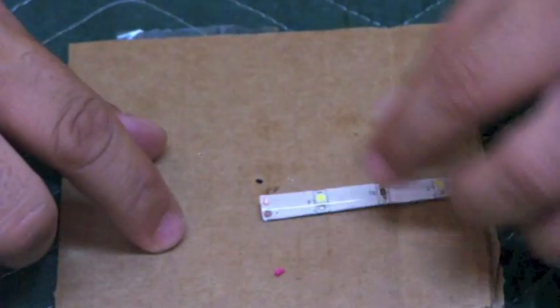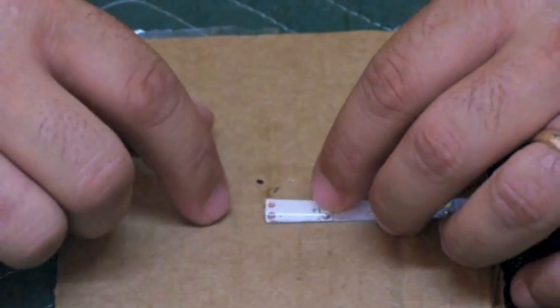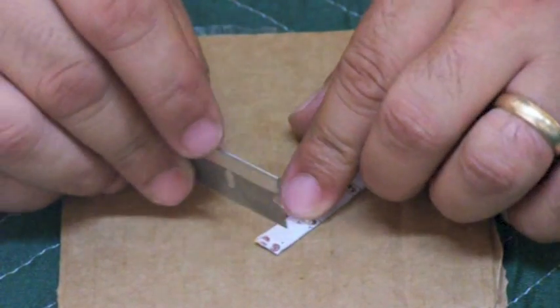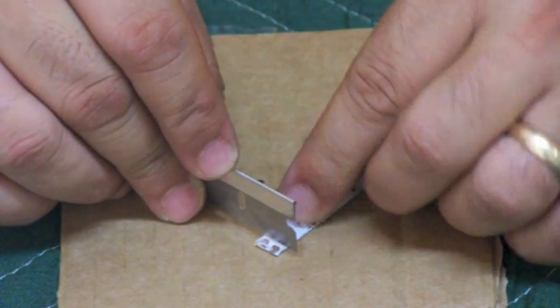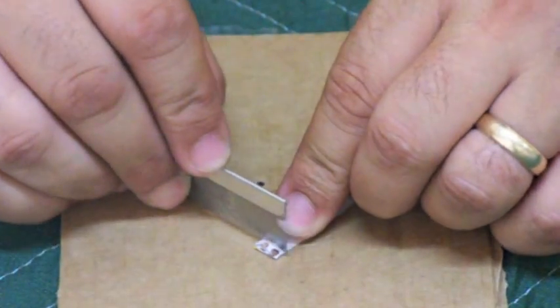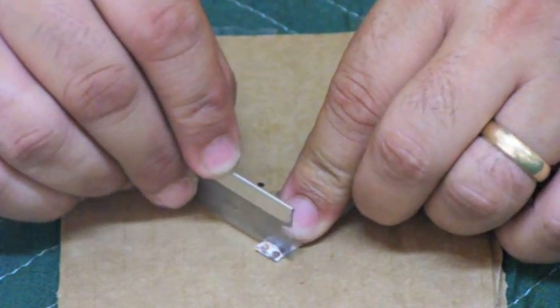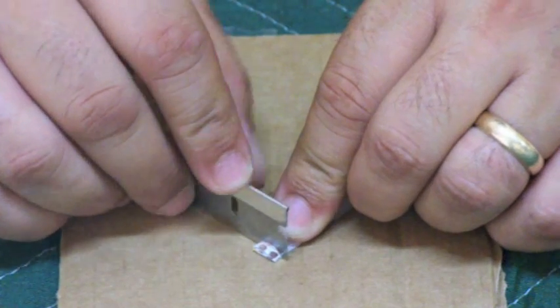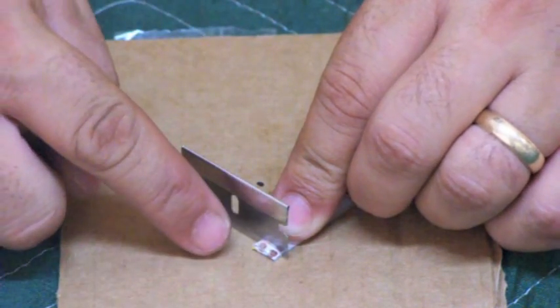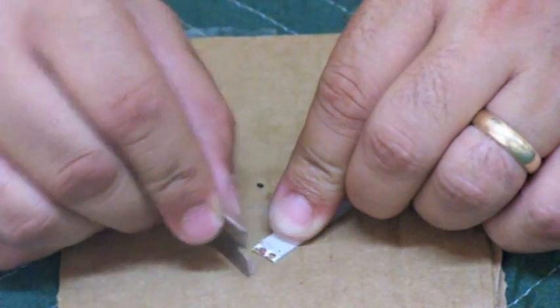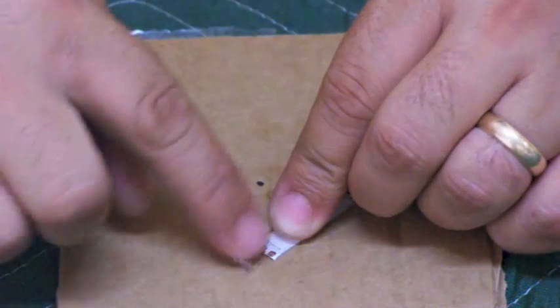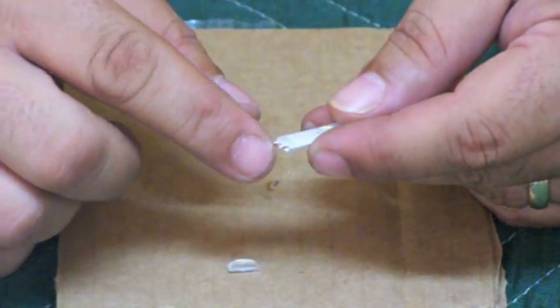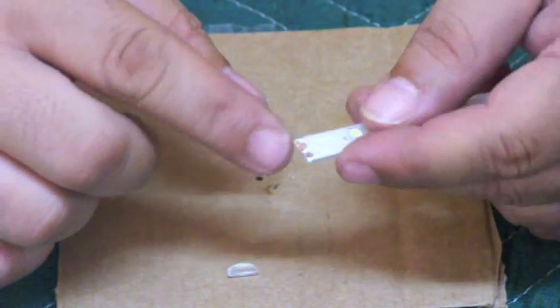I'm going to show you how to peel this back and reveal the connectors where you're going to solder. So I'm going to take my razor, go back and forth. It's a really sharp razor, so be careful with it. I'm not going to cut down all the way. I'm going to go most of the way down, and then I'm going to pull, and it peels right out. See that? And there's my connectors where I'm going to solder on. Right there.